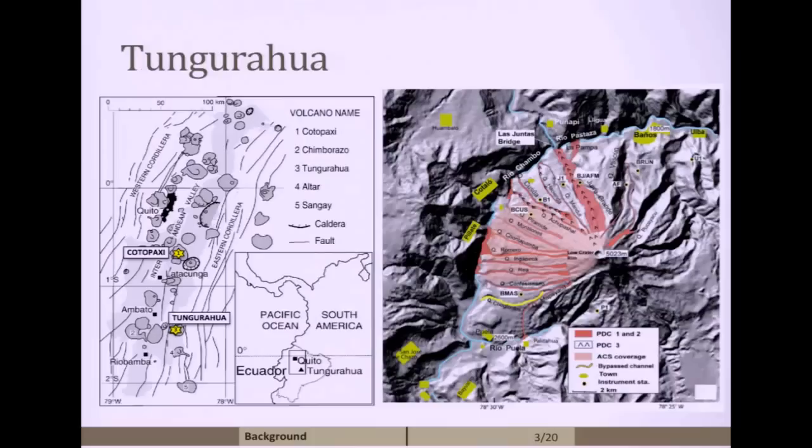My research is focused on a couple volcanoes in Ecuador. Specifically, this volcano, Tungurahua in Ecuador, is located in the central Andes. It's been erupting since 1999. The figure on the right here is depicting some of the flows from a 2006 eruption. The areas in green are actually some of the surrounding communities.